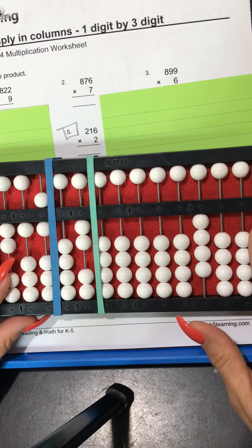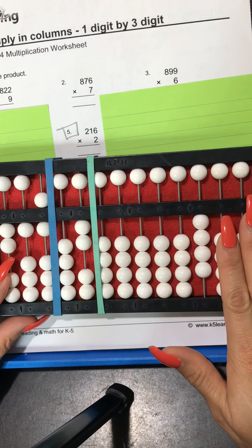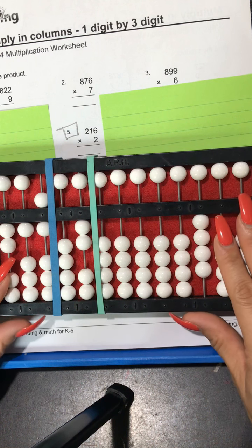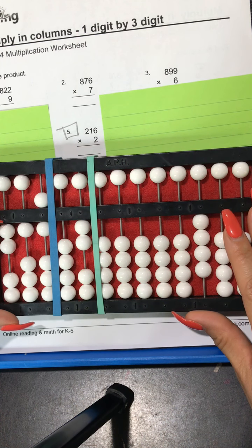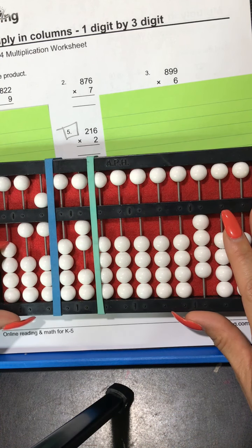So on my right hand side I'm going to say 2 times 2 is 4 so that means it's 400. So on my right hand side I made sure to set 400 and on my left hand side I'm done multiplying by 200 so I clear that.